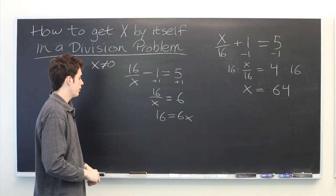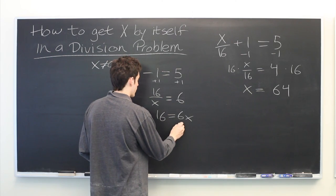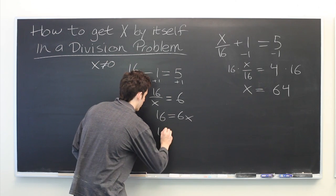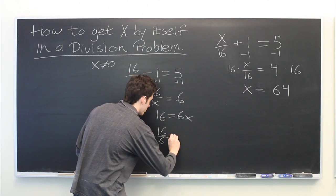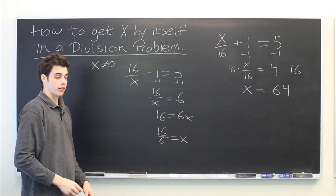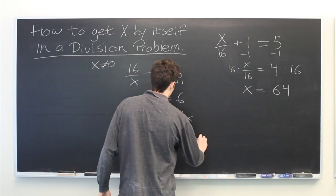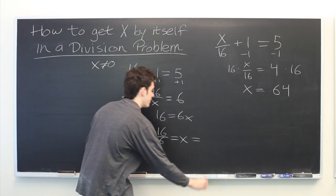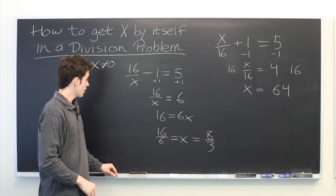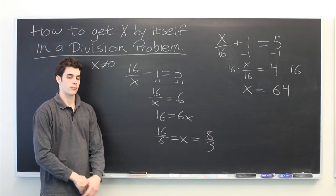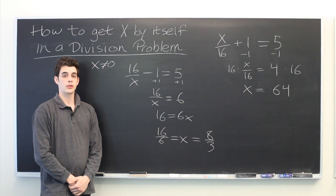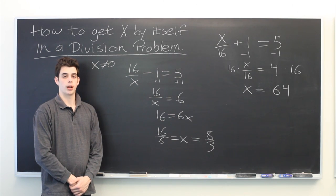Now from here, we can simply divide both sides of the equation by 6. We get 16 over 6 equals x. And if you want, you can simplify that a little bit further by dividing both the top and bottom by 2, and we get 8 thirds. And that's all there is to it. My name is Ryan Malloy, and we've just discussed how to get x by itself in a division problem.